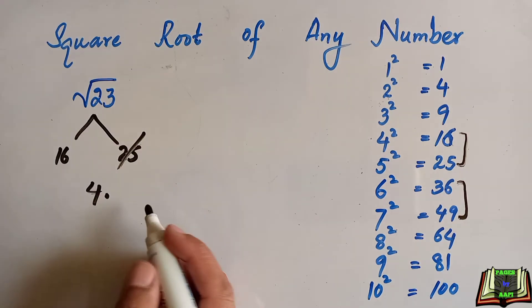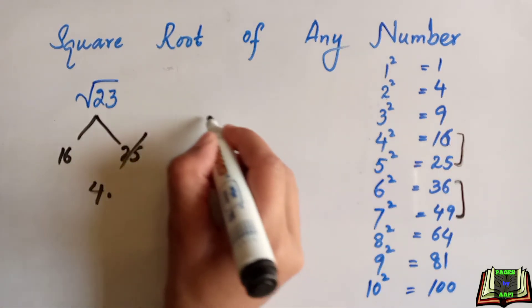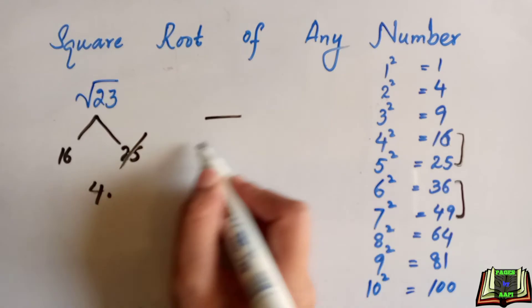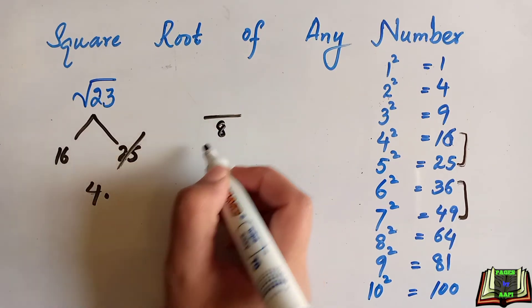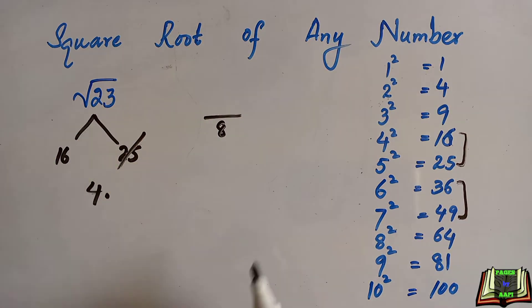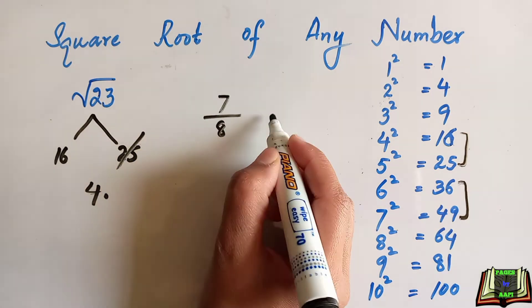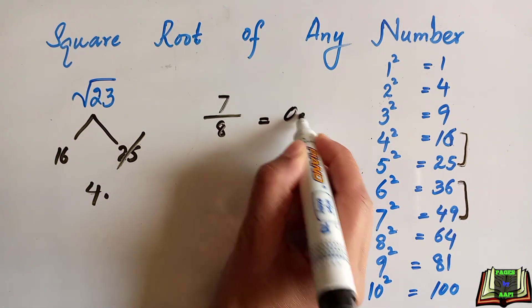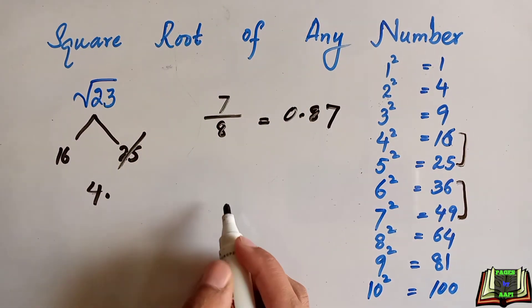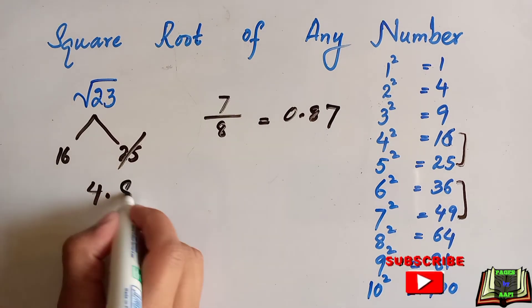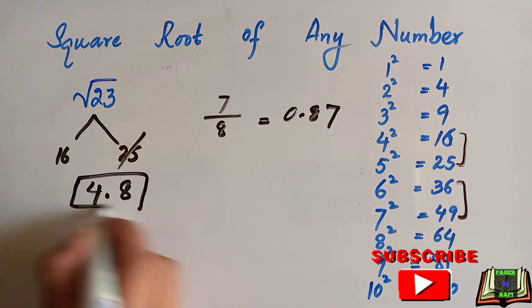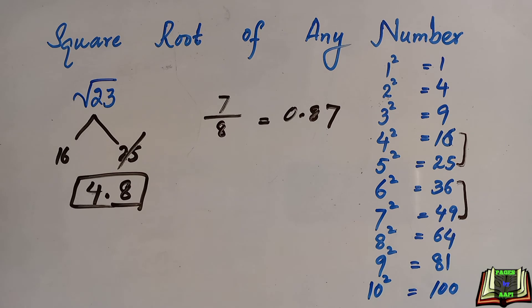For the decimal part, we follow the formula like before. We double the approximate root: 4 times 2 equals 8. On the numerator we keep the difference: 23 minus 16 equals 7. 7 over 8 is approximately 0.87, so the required square root of 23 is 4.8. I hope you are clear now.